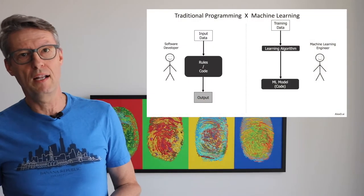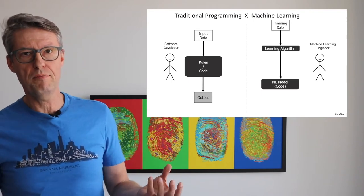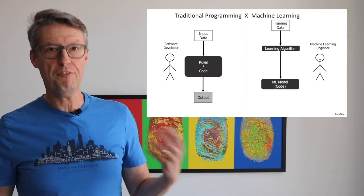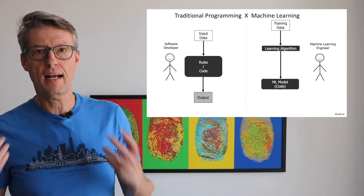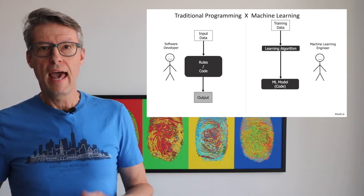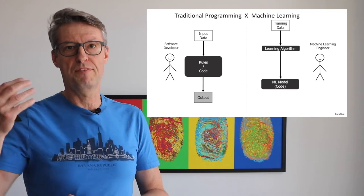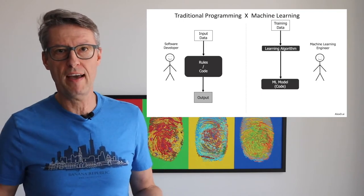In traditional programming, the data during the development phase is only important for testing whether the code is correct — nothing from the data is included in the code itself. In machine learning it's different. You start with training data, and a machine learning engineer chooses a learning algorithm, because there are different techniques available. That algorithm, applied on top of the training data, builds a model.